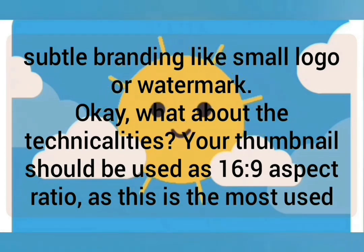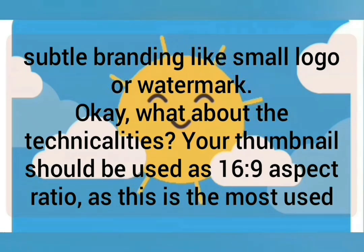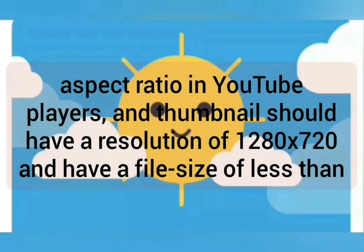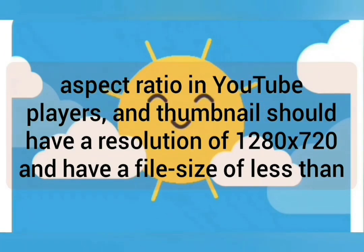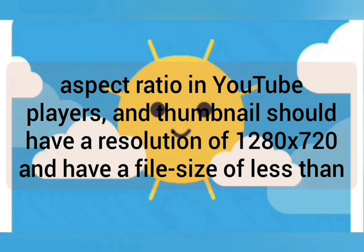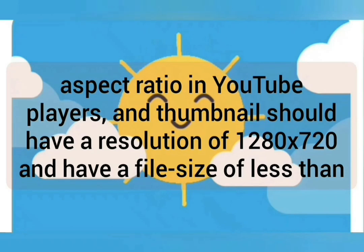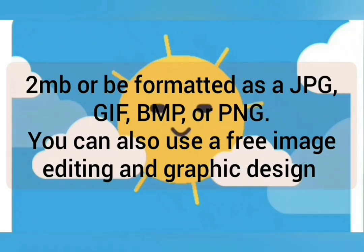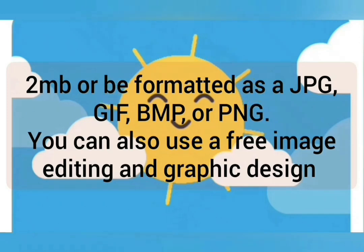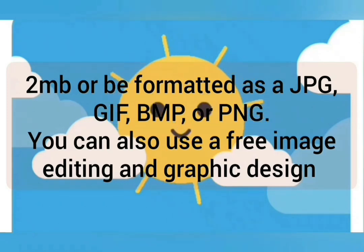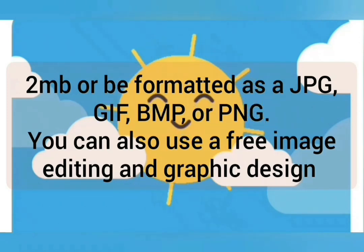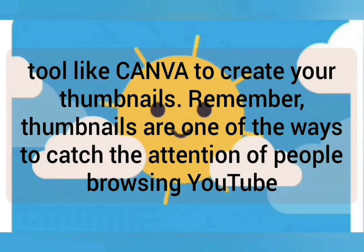For the technicalities: your thumbnail should use a 16:9 aspect ratio, as this is the most used aspect ratio in YouTube players. Thumbnails should have a resolution of 1280 by 720 and a file size of less than 2 MB, formatted as JPG, GIF, BMP, or PNG. You can also use a free image editing and graphic design tool like Canva to create your thumbnails.